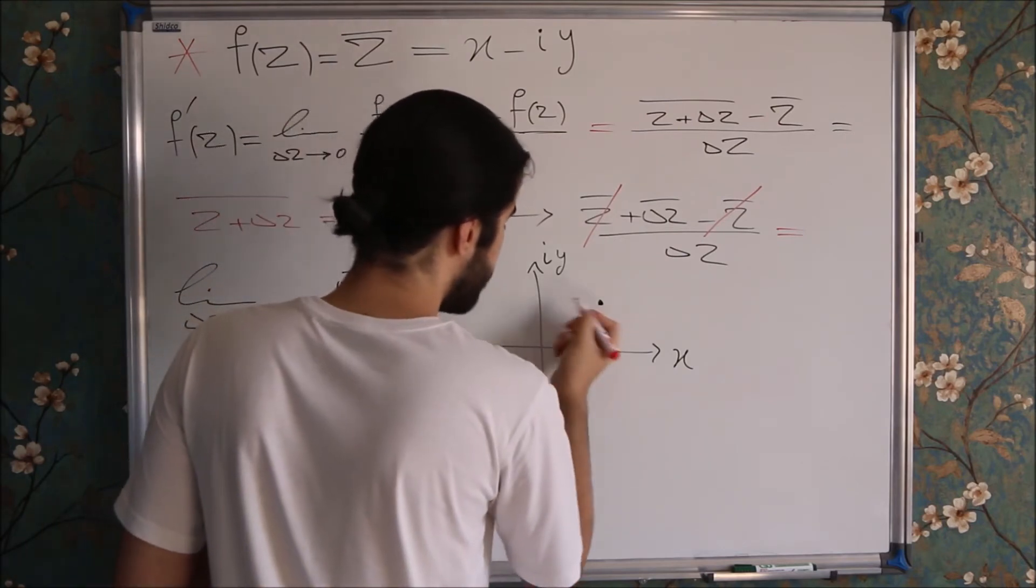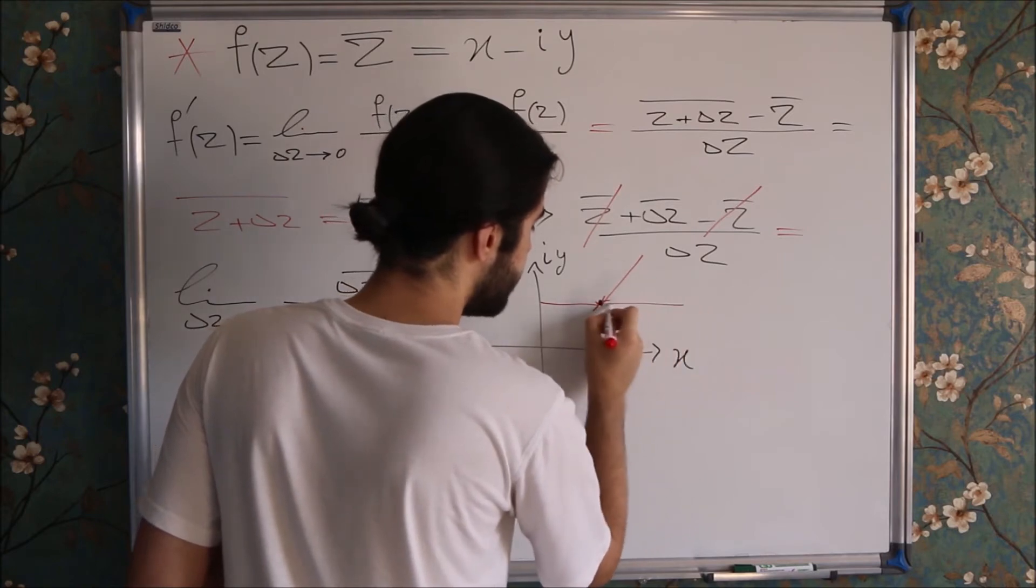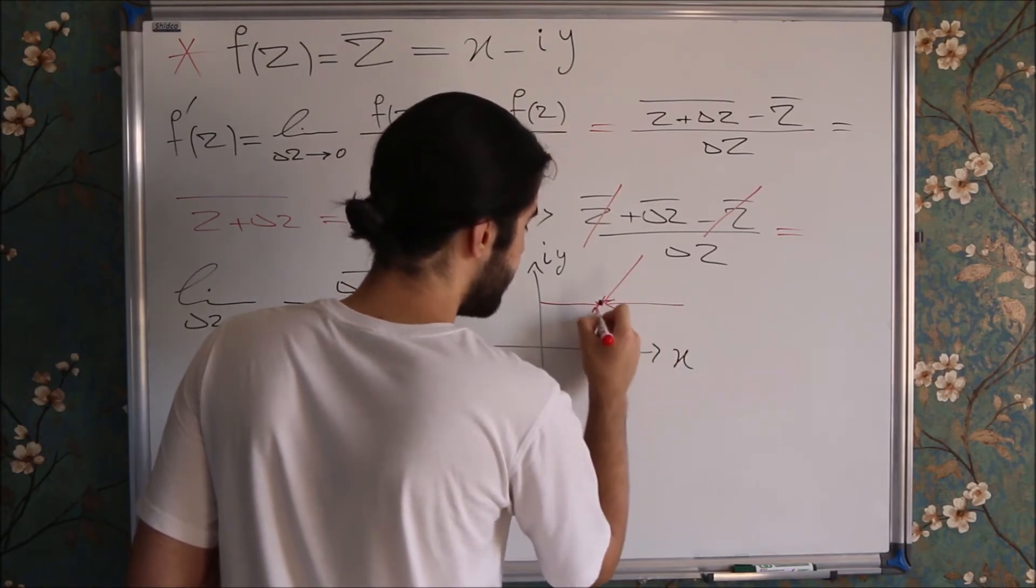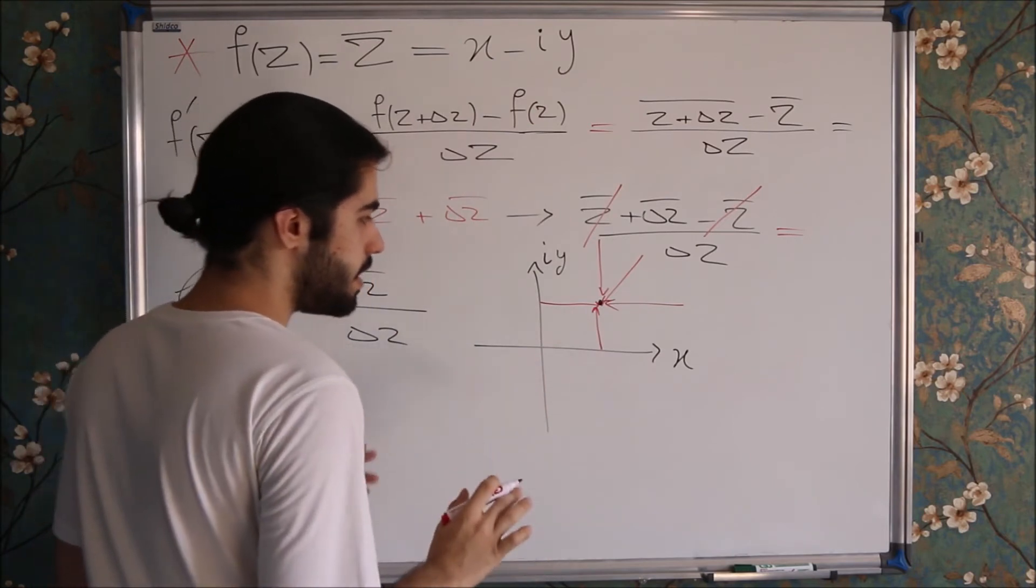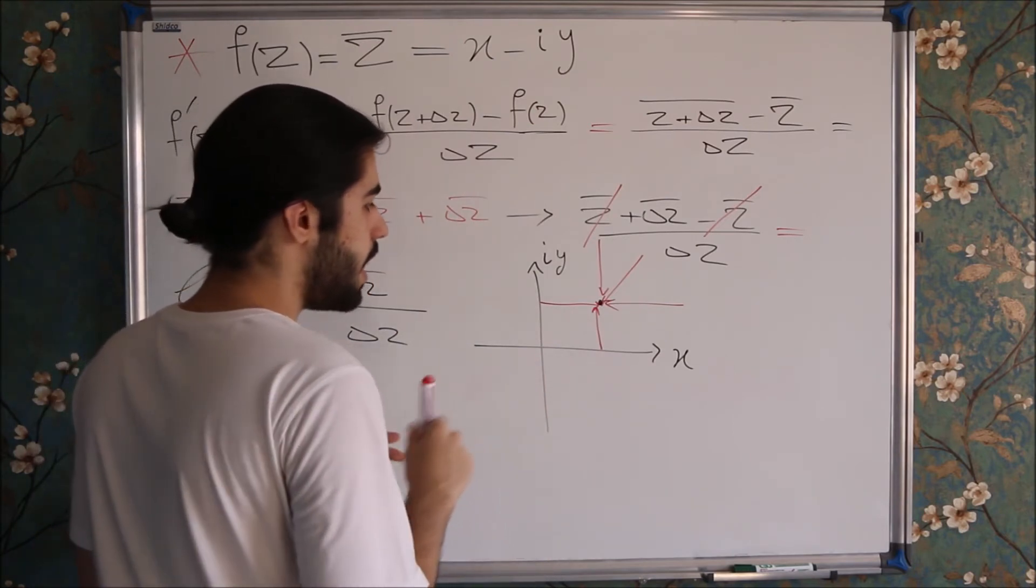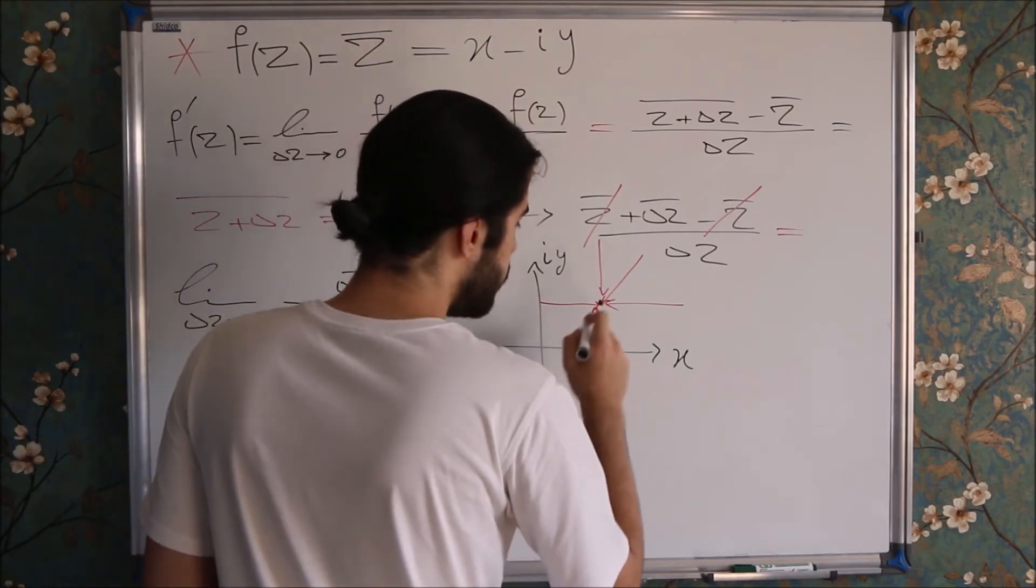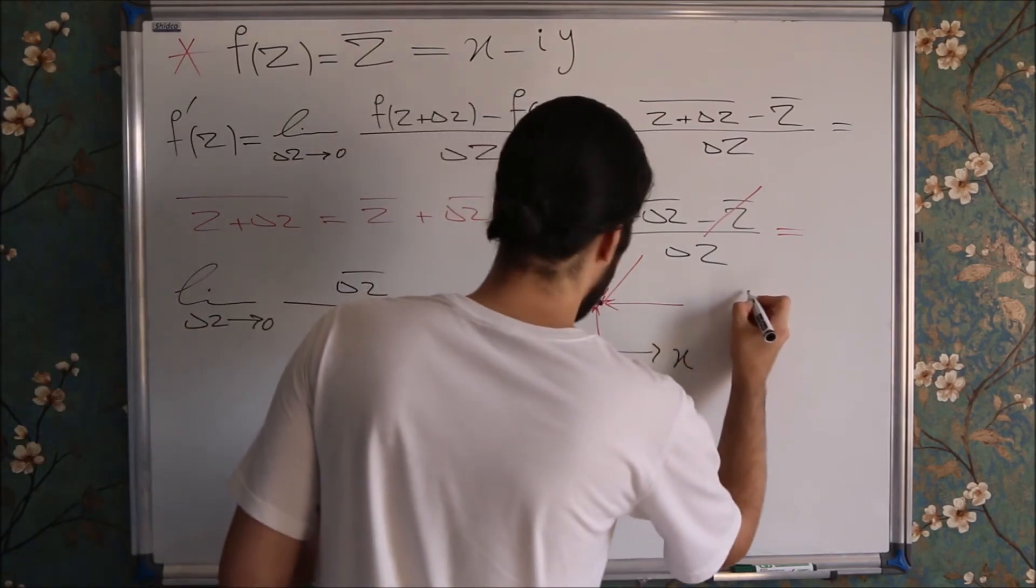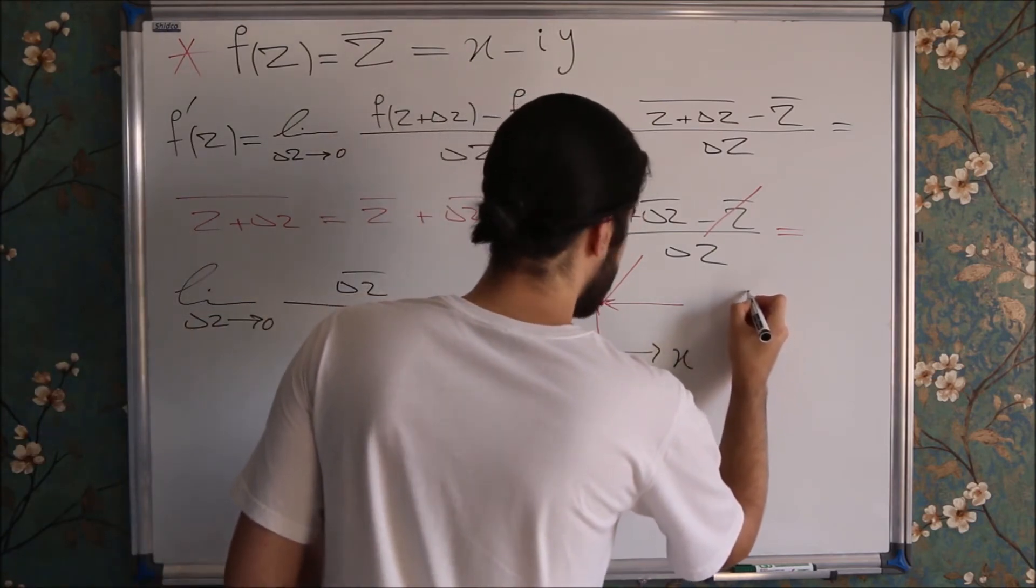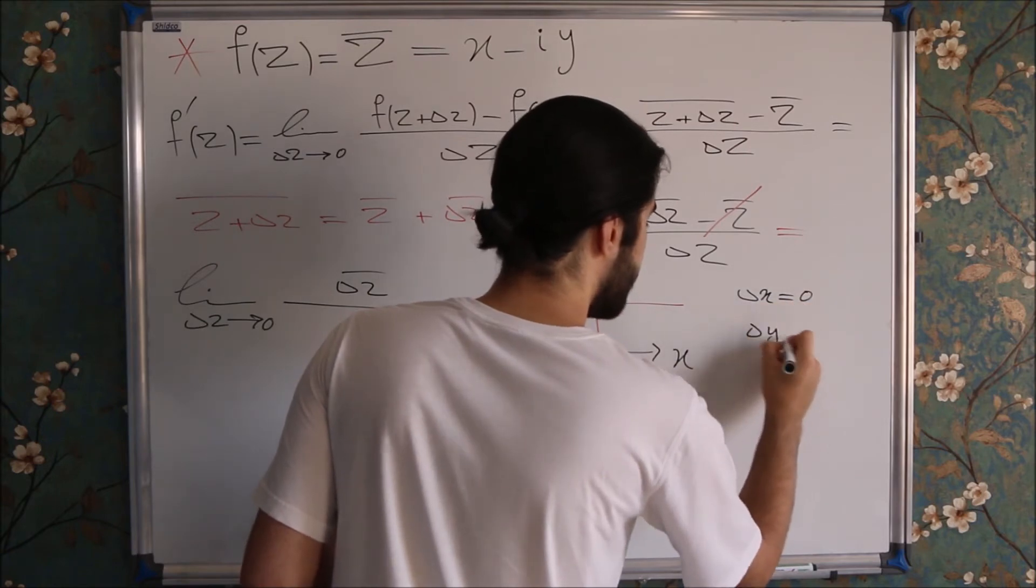I don't know, this path, maybe this path, maybe this one, maybe this one. All those paths are accepted if we want to take a limit. And for example, I'm going to use two of them, like the path when Delta X is zero and when the Delta Y is zero.